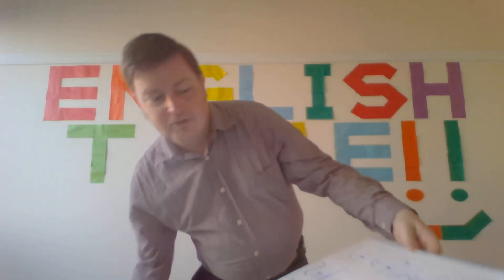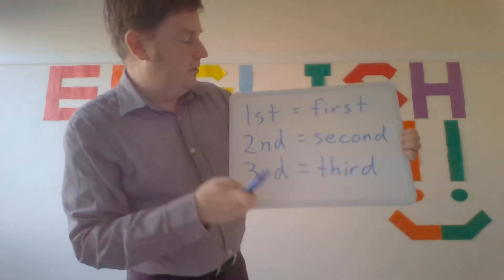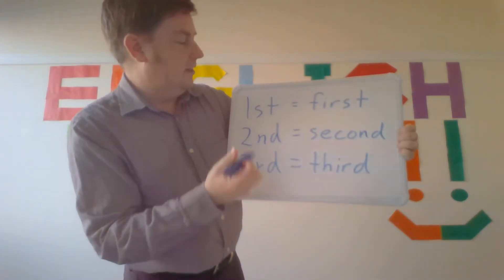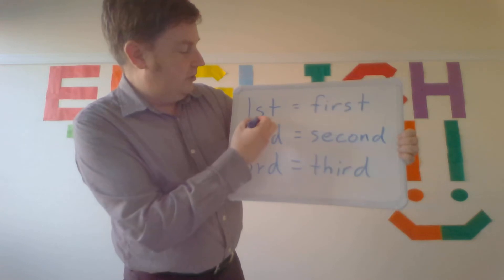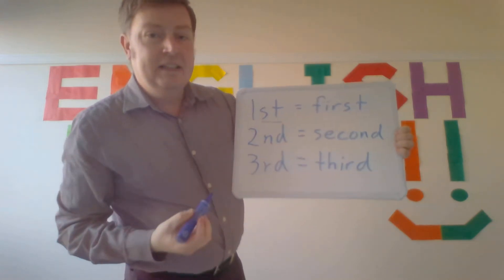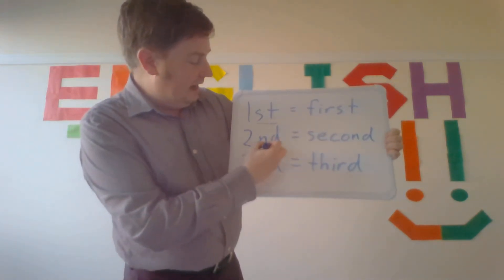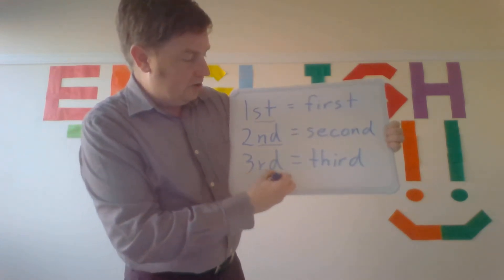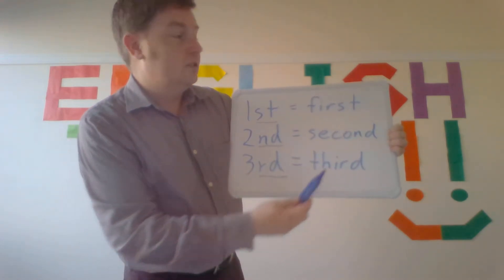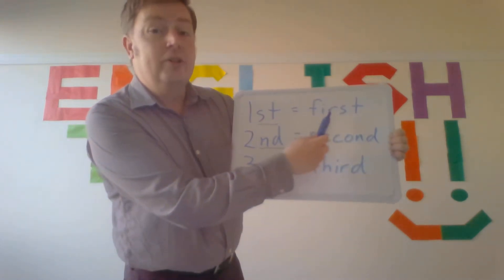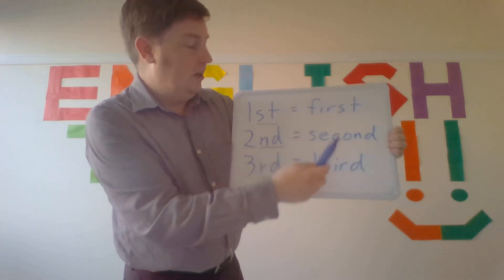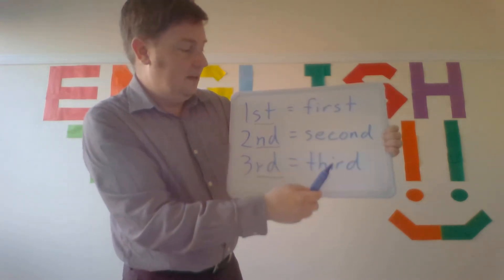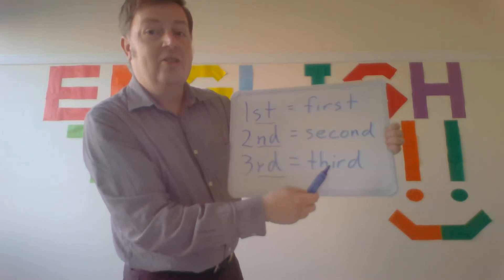So for numbers you have first, second, third. For 'first,' use the suffix 'st.' For 'second,' use 'nd.' And for 'third,' use 'rd.' Please repeat: first — first, second — second, third — third.